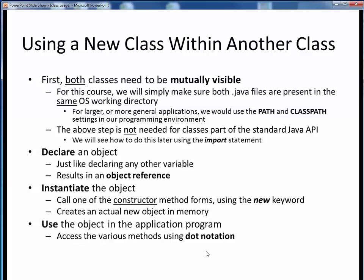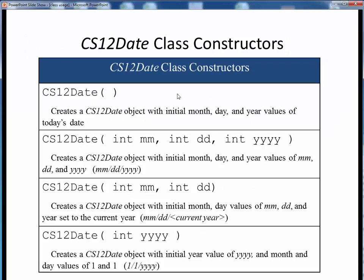All of this probably seems pretty abstract at this point, so let's take a look at some specific examples. Here are some of the available constructor methods for the CS12Date class. These aren't all of the constructors, but these are the main and most useful ones. You can find the other constructors in the CS12Date API. This is an example of overloading in Java — four different versions of the same method name, each accepting its own set of input values.